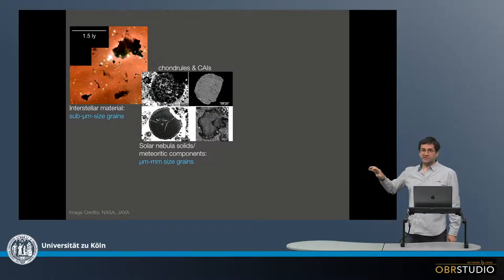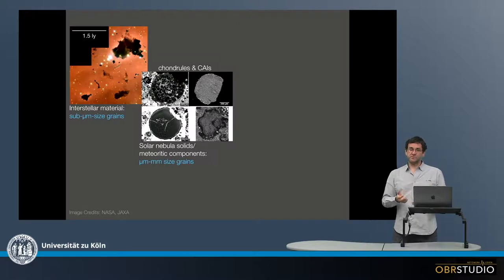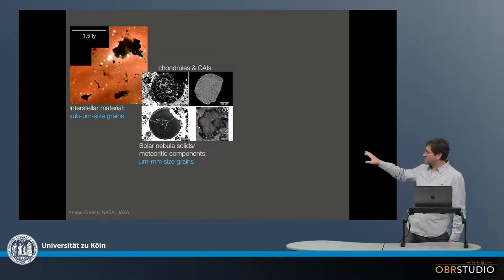And these grains have sizes of micrometers to tens of micrometers, which is the matrix, and hundreds of micrometers to millimeters, which are the chondrules.